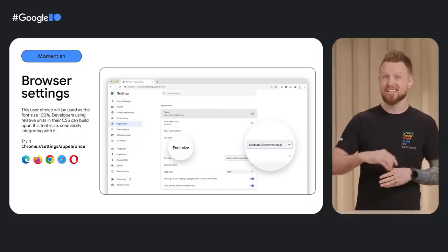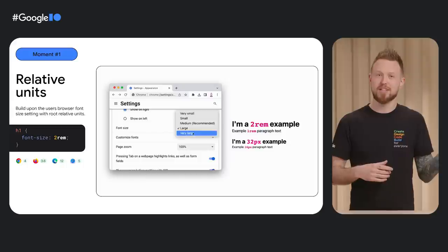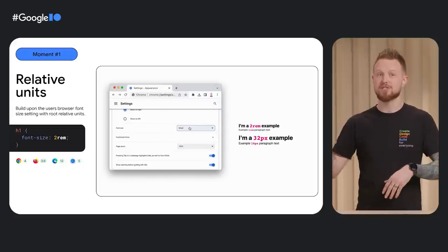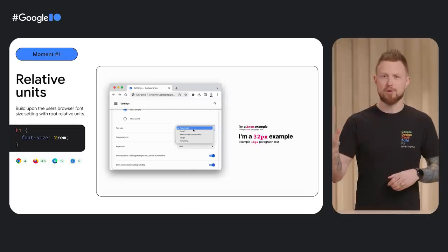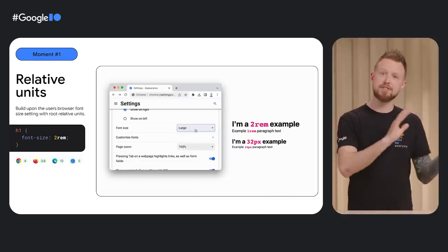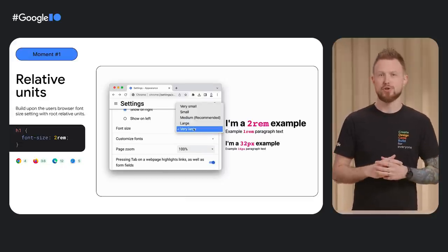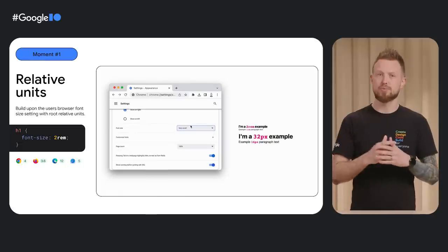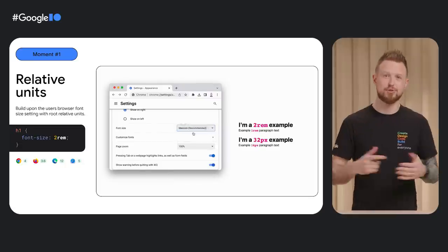Font size preference rolls nicely into relative units. This video demonstrates how the user's browser font size preference and relative CSS units work together. See how the preference for larger makes 2rem larger and smaller makes it smaller. Also notice how the 32-pixel example doesn't work with the user's preference at all. Pixel font sizes are not tailored to the user.